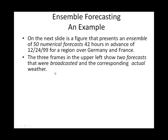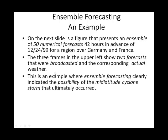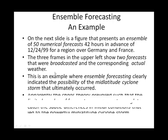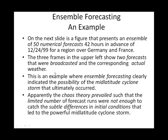Back in 1999, Germany and France were hit with a mid-latitude cyclone on Christmas Eve. They were hit hard with a weather event that was not necessarily forecasted to be coming. So we're going to look at what forecasters thought they'd get on Christmas Eve, then what actually happened, and then examine those 50 ensemble forecasts for that event.